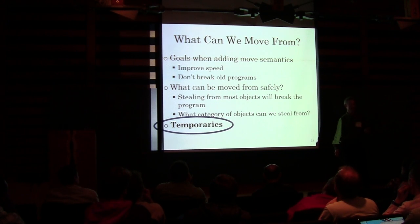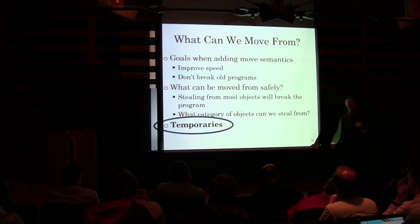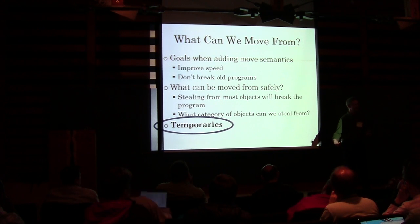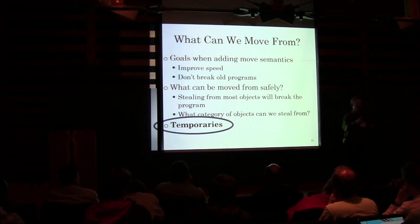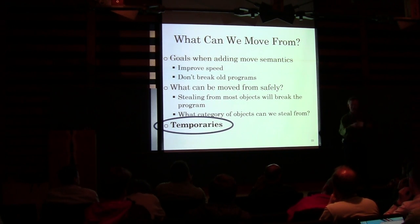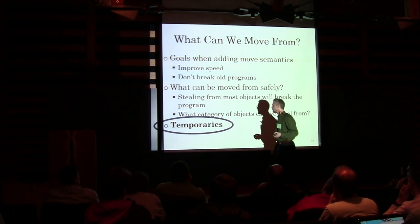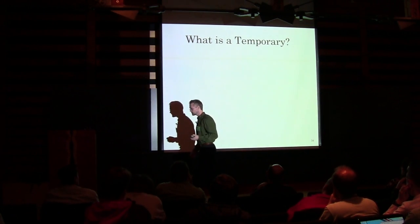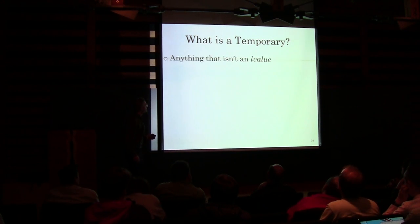Temporaries are interesting because we usually don't even get to think about them. The compiler invents them for us and pushes them around. Eventually, from operations on temporaries, things get pushed into values that we can operate on. Once it has a name, then you as a programmer can go thrash around with that named thing. But a temporary — you can't do that. That's all up to the compiler. So what's a temporary? Anything that isn't an L-value.